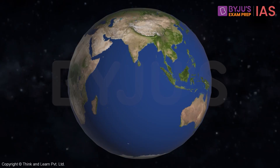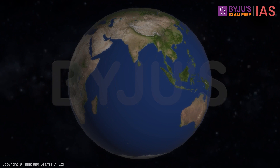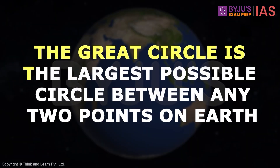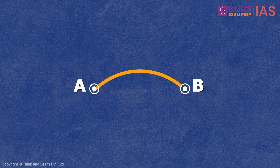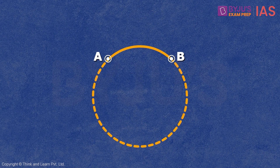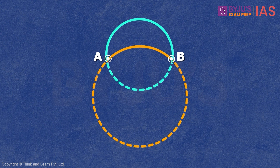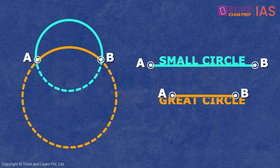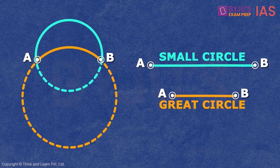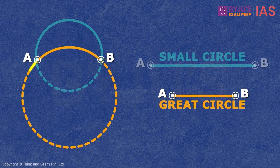One question you must be eager to ask: why is the path along the great circle the shortest? We know that the great circle is the largest possible circle between any two points on Earth. Consider points A and B — these two points can be connected through curved paths of various diameters. When the circle is larger, the path connecting the two points becomes shorter. Therefore, when we take the path of the great circle, which has the largest diameter, the path that is connected will become the shortest.